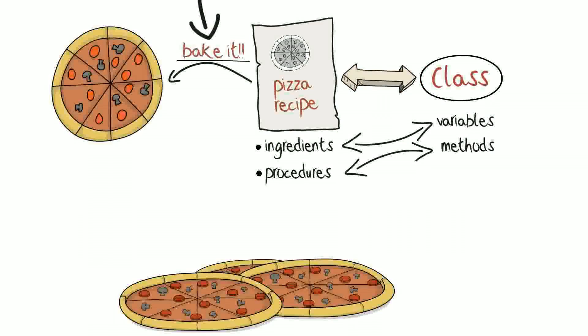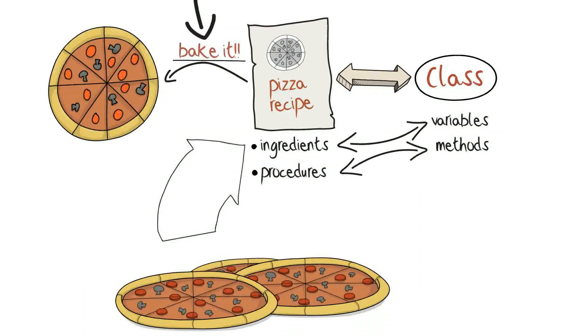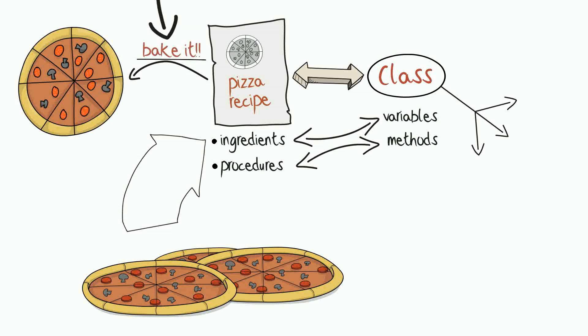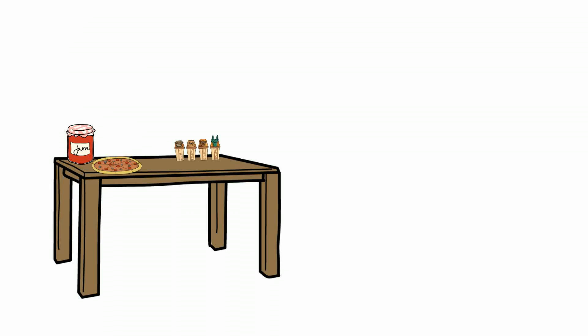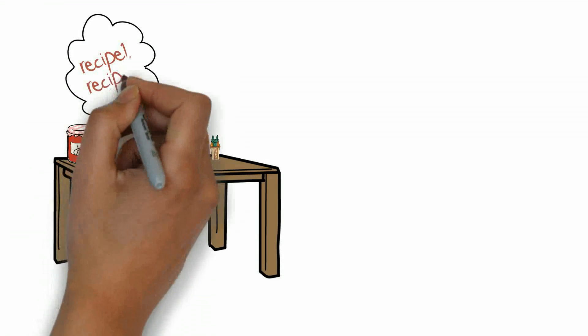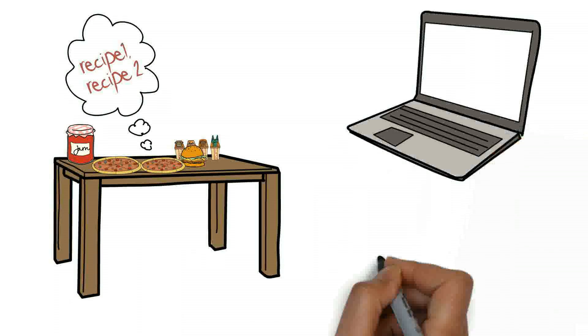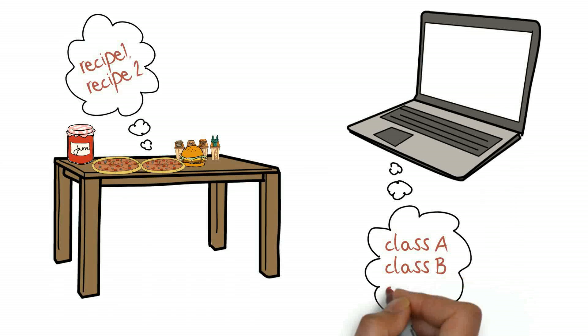You can build as many pizzas as you want from the same recipe. Likewise, you can create as many objects as you want for one class. The final dessert table may have different flavors of pizzas using different recipes, just like a program uses different classes for generating the desired output.